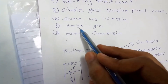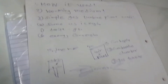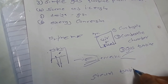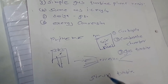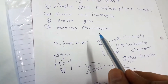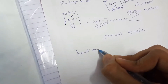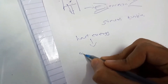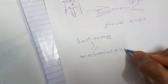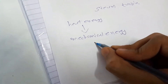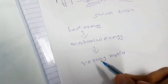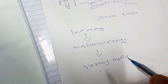The design of a gas turbine is the same as a steam turbine, and I will talk more about that in upcoming videos. For energy conversion: first we get heat energy, from heat energy we convert it into mechanical energy, from mechanical energy we get rotary motion, and we can use this rotary motion to produce electricity and many other things.